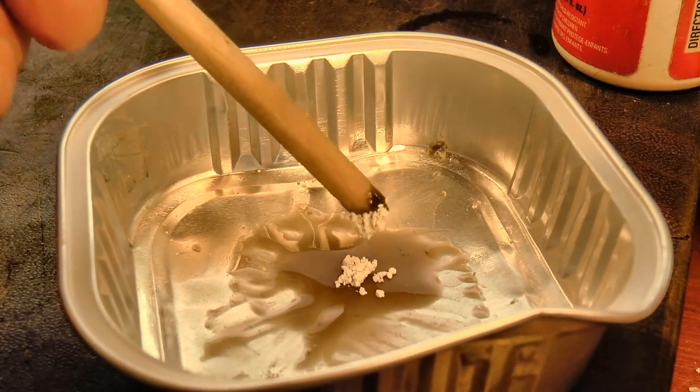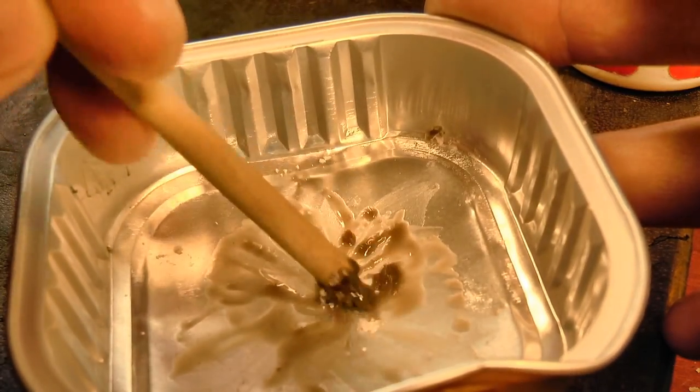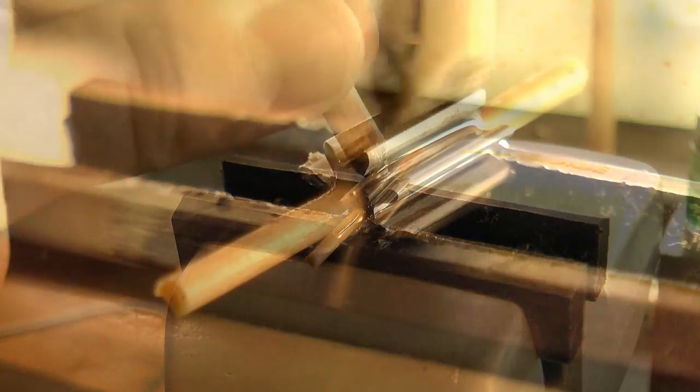Before I temper the part, I need to polish up a shiny surface, so that I can see the color changes as the part heats up. So a quick polish with some oilstone powder, and it's ready for tempering.